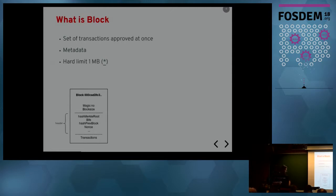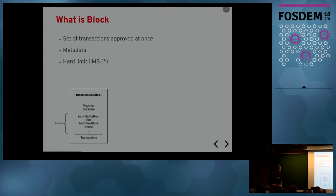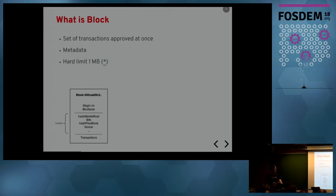This is the detail of one block. There's something called a magic number which identifies the network, because I'm talking about Bitcoin blockchain but there are different flavors. This magic number identifies the type of blockchain — there are also blockchains for Namecoin, which is relatively similar to Bitcoin and can be identified with this magic number.